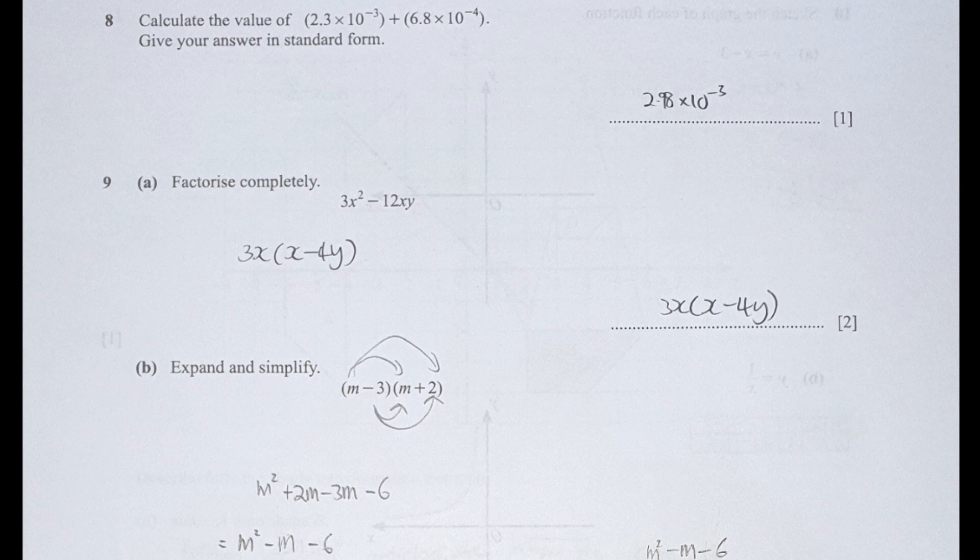For question 9a, factorizing this, I extract 3 and x from both variables and get x minus 4y as the result in the brackets. For part B, expand and simplify. Remember to multiply correctly, and you should get m squared minus m minus 6.